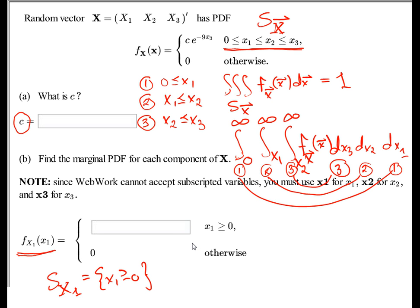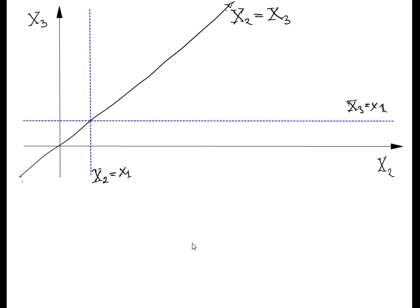Once we pick x1, let's look at what the picture looks like. We had the relationship 0 ≤ x1 ≤ x2 ≤ x3. So x1 is a lower bound for both x2 and x3. We put x2 on the horizontal axis and x3 on the vertical axis, and we have the boundary x2 equal to x3. We've already chosen a positive x1.